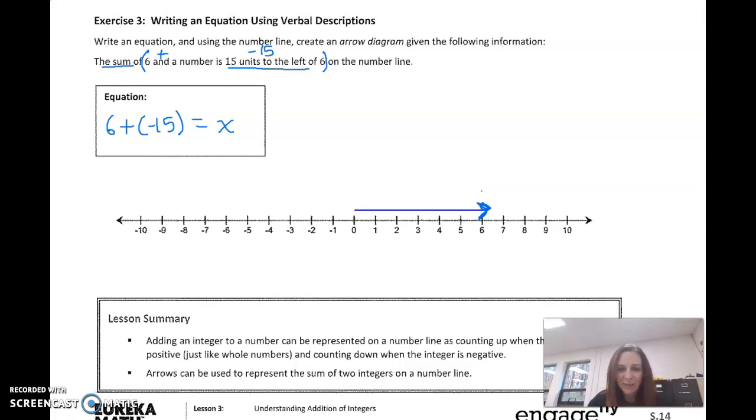So from here, I'm going to just kind of maybe count it out. One, two, three, four, five, six. That gets me back to zero. So seven, eight, nine, 10, 11, 12, 13, 14, 15.